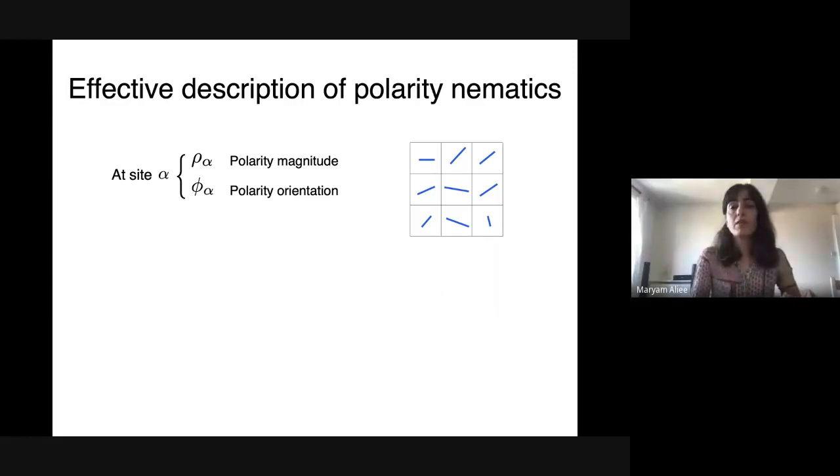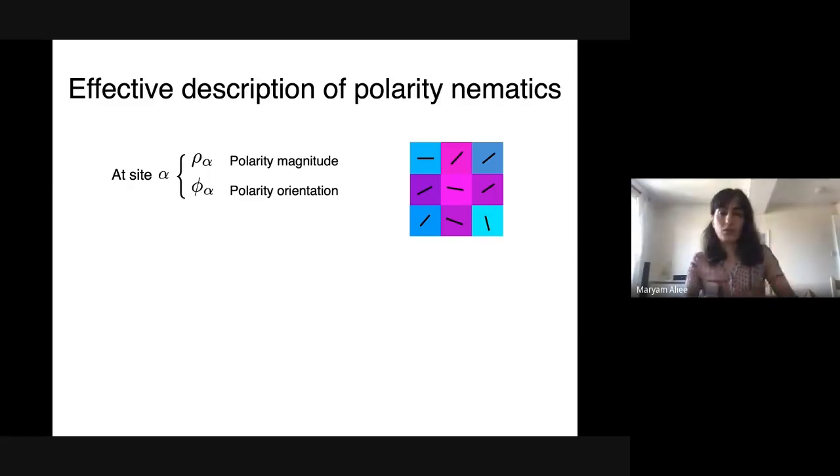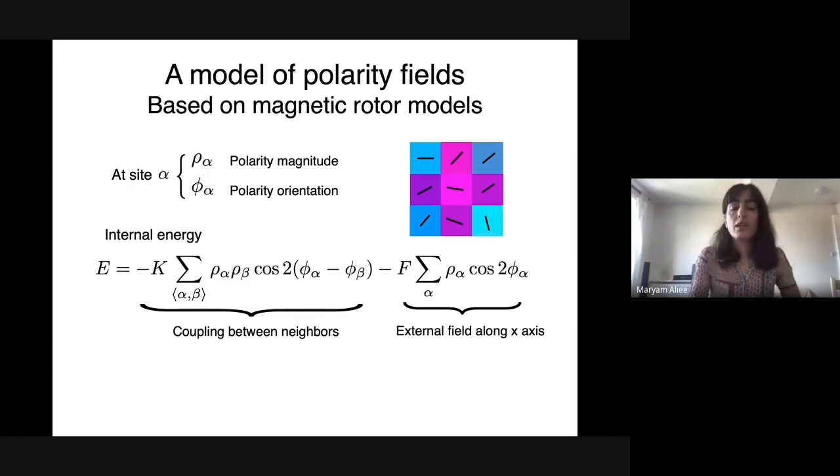The model is similar to classical spin models on square lattices like the XY model. At each square we have a polarity defined by orientation and magnitude which can vary. For the rest of the talk I show the magnitude with a color code. We use a modified XY energy for this system with interactions between neighbors and coupling with an external field, which in tissues can be a signal from outside or stress.